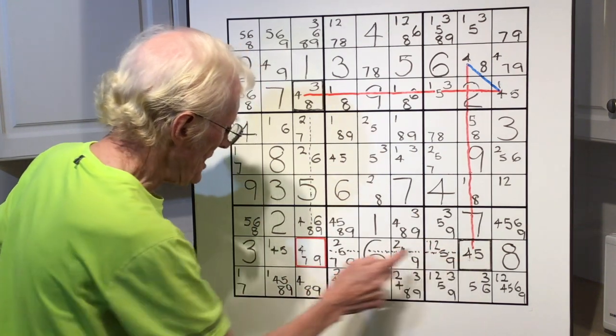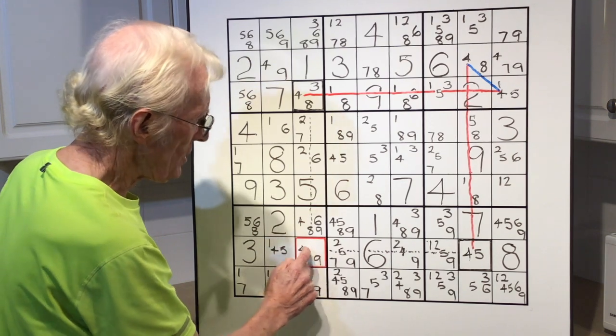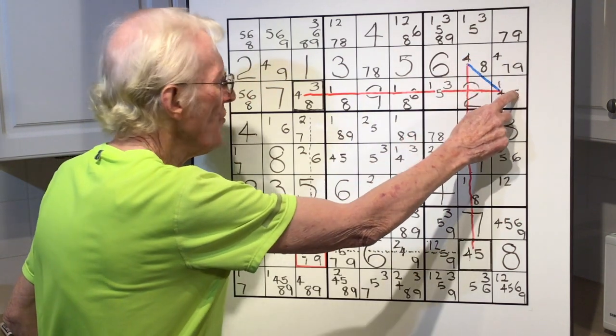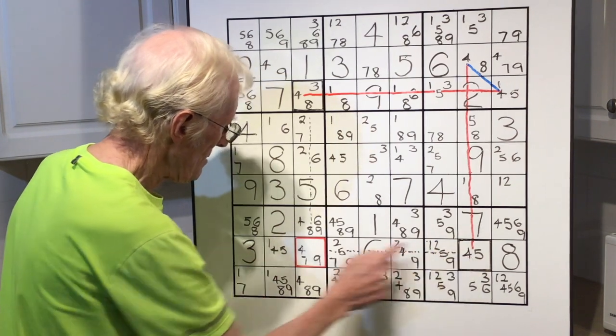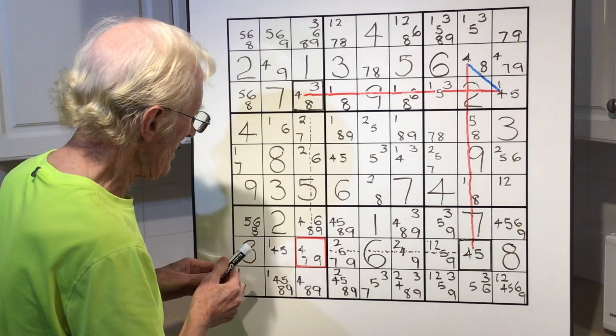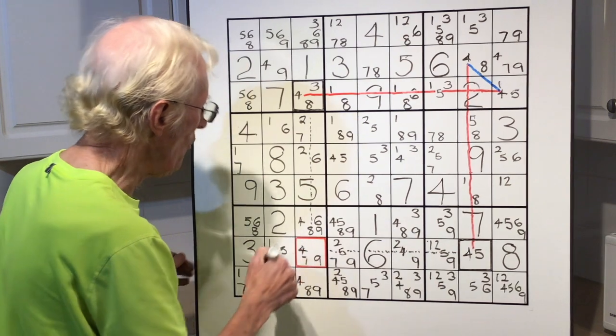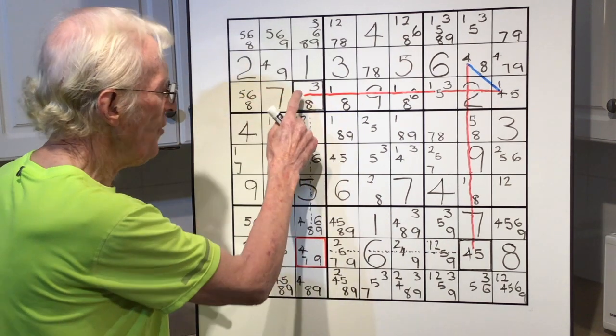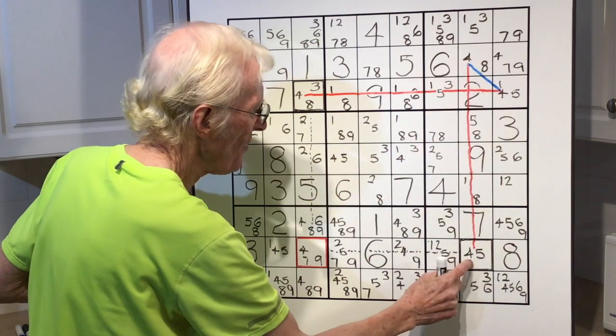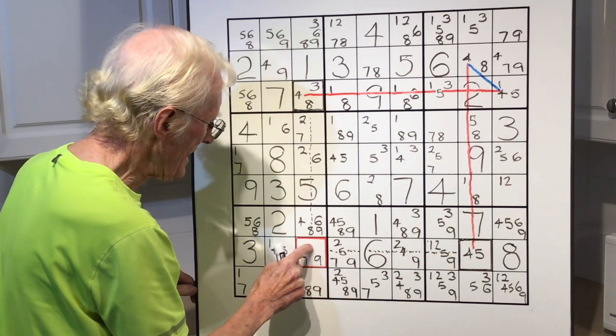The basic way it works: if this is a 4, this cannot be a 4. If this is a 4, this cannot be a 4. If this 4 can see that one, this 4 can see that one. If this is a 4, that's not a 4. That is a 4. That's not a 4. Let's say that this is a 4. That can't be a 4. If that's a 4, that's not going to be a 4. So it's either this one or this one. But whatever which one it is, this cannot be a 4. And we can get rid of it.